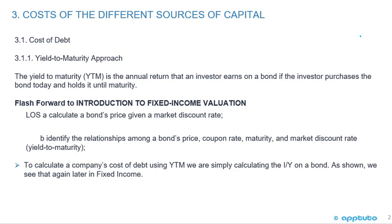The yield to maturity is the annual return that an investor earns on a bond if the investor purchased the bond today and holds it until maturity. This is a flash forward to the introduction to fixed income valuation, where one LOS is to calculate a bond's price given a market discount rate, and in this case we're calculating the discount rate given the price. Another LOS identifies the relationships among a bond's price, coupon rate, maturity, and the market discount rate, which is the yield to maturity.